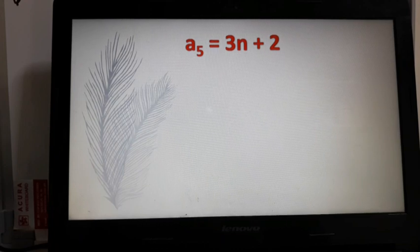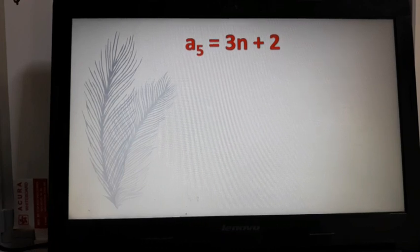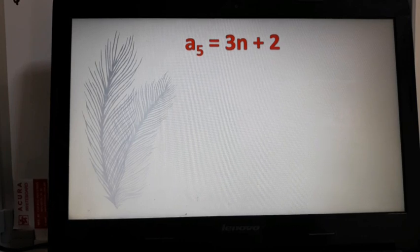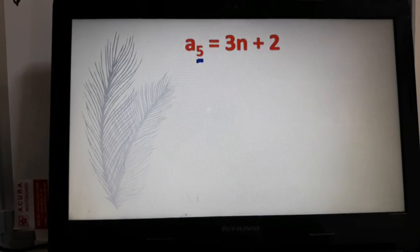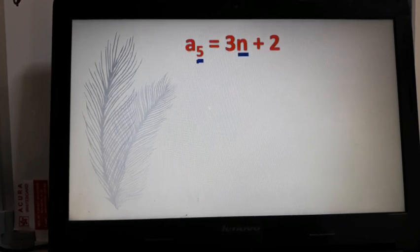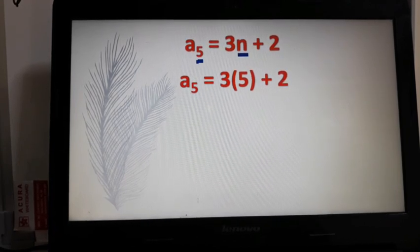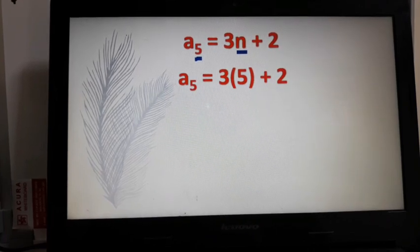a_5 equals 3n plus 2 is the formula for the fifth term. So our 5 here, which is our n, will be the value of n in the formula. That will give us a_5 equals 3 times 5 plus 2.